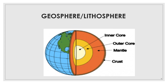Now moving on towards the next sphere, that is lithosphere or geosphere. As I told earlier, geo means ground, and so this sphere is the surface of the earth that is made up of solid rock and soil. It is also known as the crust — the outermost layer of the earth, which is the thinnest layer. It is thinner under the ocean and thicker under the continents. Below the crust, there is another layer called the mantle. That middle layer is thicker than the crust but thinner than the core.